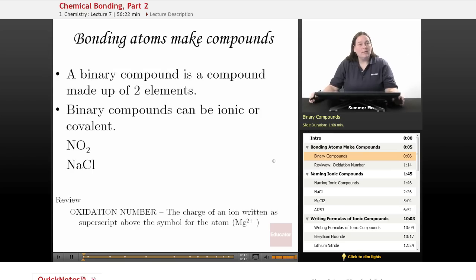What we're looking at right now are binary compounds, which are compounds made up of two different elements—not necessarily two atoms, but two different elements. Binary compounds can be ionic or covalent.